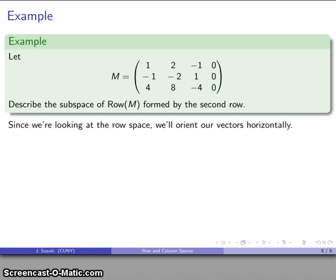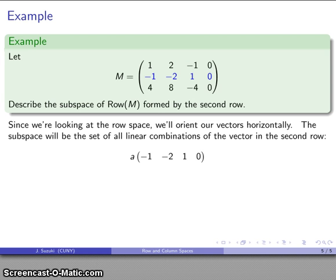And so this is going to consist of all linear combinations of just the second row only, which means I can really only look at scalar multiples of that. So note that since we're looking at the row space, I'll go ahead and treat my vectors as being horizontally oriented.